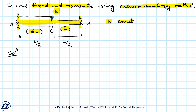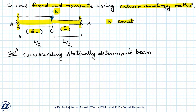To solve this using the column analogy method, the first step is to draw the corresponding statically determinate beam. In this case that will be a simply supported beam, obtained by replacing the fixed ends at A and B with pin supports.